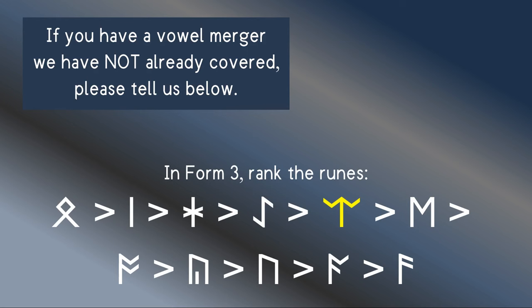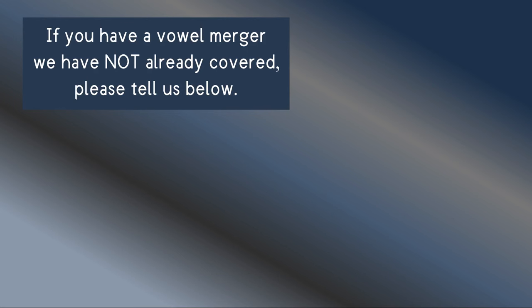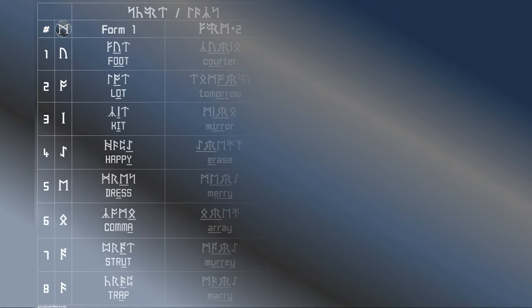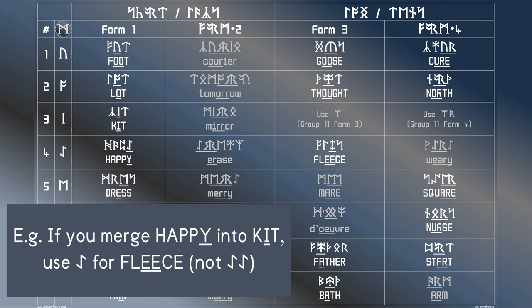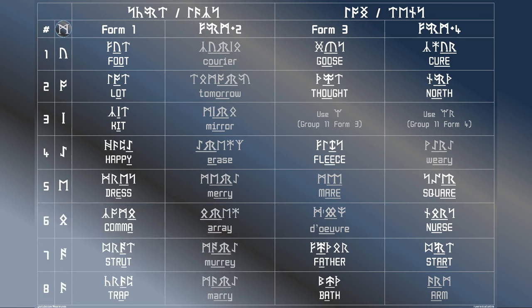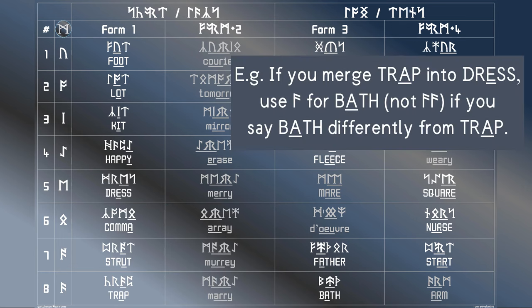That's all the vowel mergers covered. One last point in regards to them: if you say two form-1 vowels the same, then whichever form-1 rune you're not using, you don't need to double that rune when writing a form-3 vowel. For example, if you say happy with the kit vowel, then you can write fleece with a single Eo — you don't need to double it. Or, if you say trap with the dress vowel, then you can write bath with a single Ash.